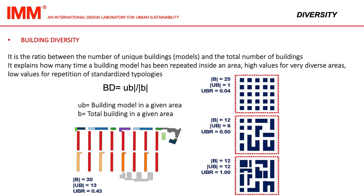Building diversity is the ratio between the number of unique building models and the total number of buildings. It explains how many times a building model has been repeated inside an area. High values indicate very diverse areas; low values indicate repetition of standardized typologies.